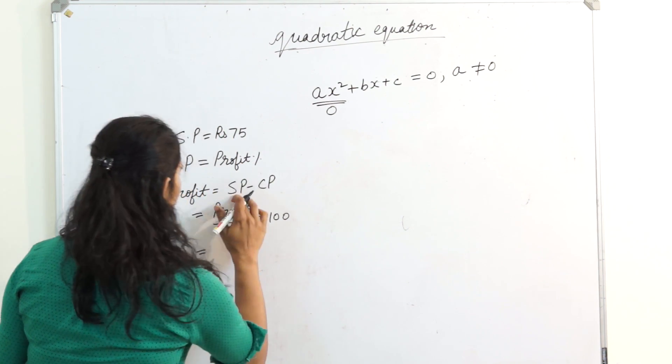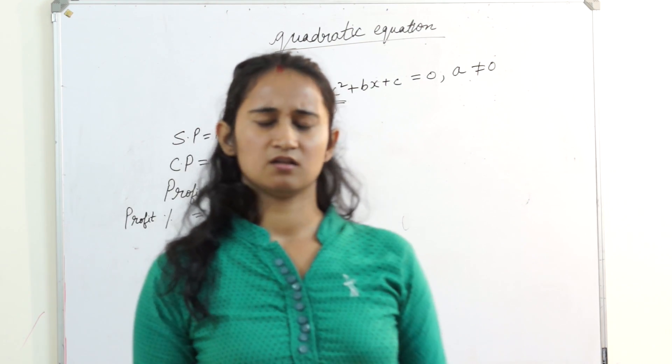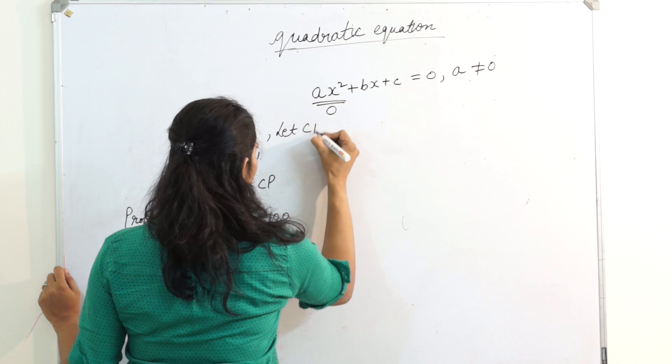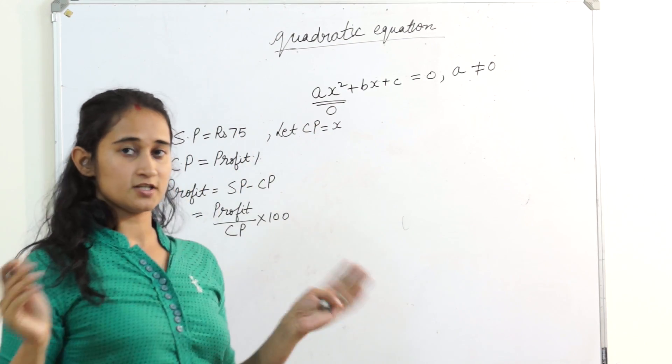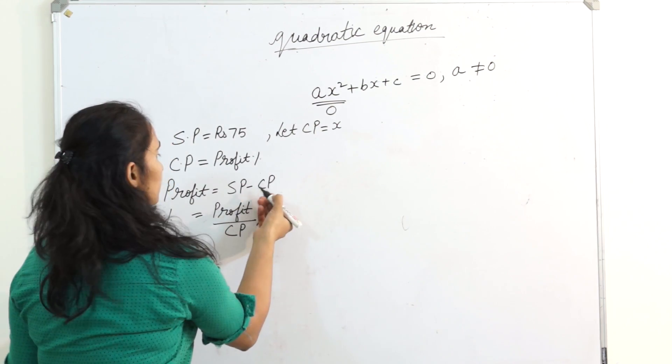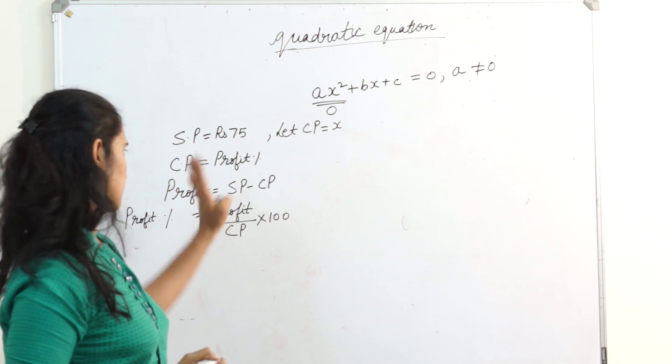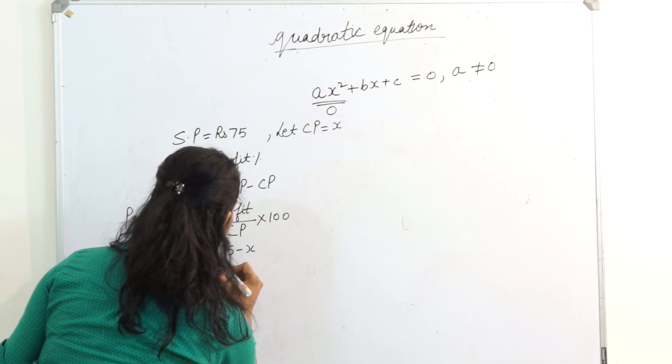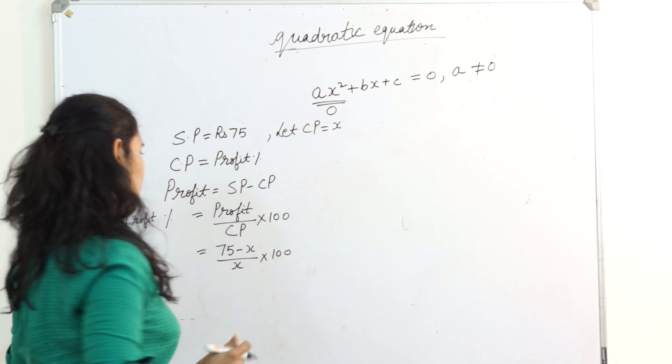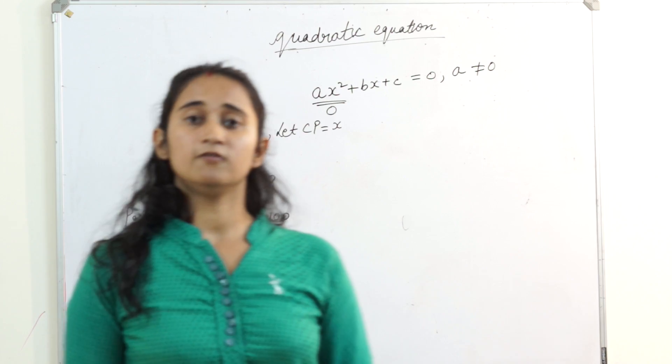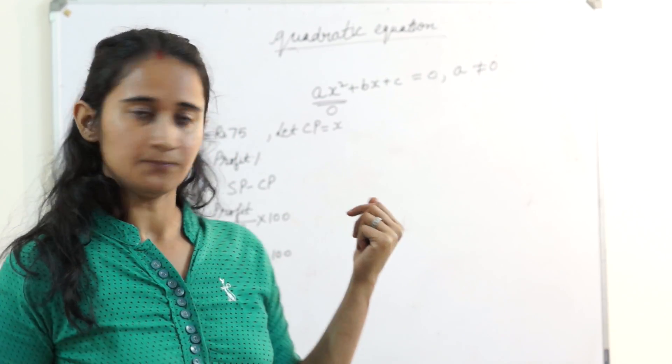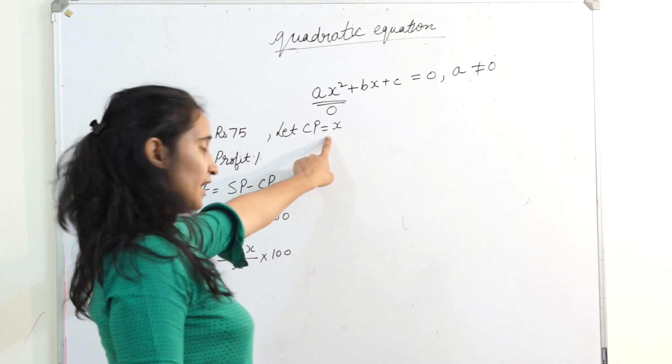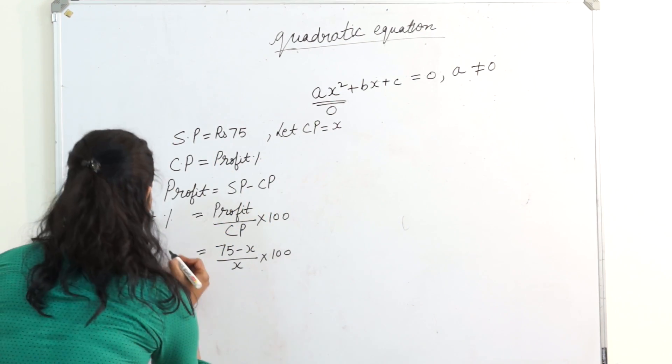Let's substitute the values. What is my profit? SP minus CP. But I think we don't know what is CP. Let's assume. Let my CP equals x. So SP minus CP, selling price is 75 rupees, 75 minus x divided by x into 100. I got my profit percent in terms of x. But here is one more clue. Profit percent is equal to cost price. So what is my cost price? x. It means profit percent is also equal to x.